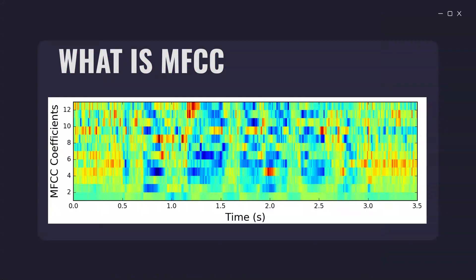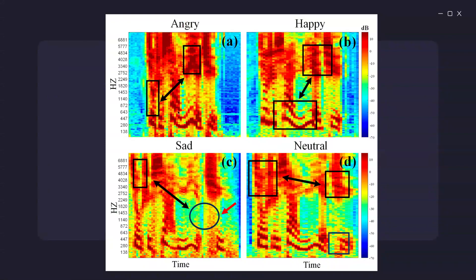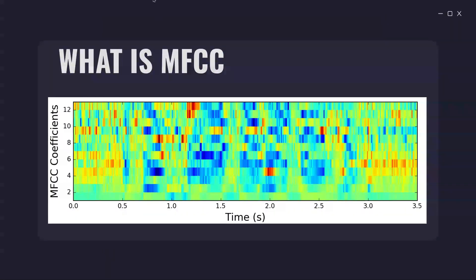Feature extraction is the process of transforming raw data into numerical features that can be processed while preserving the information in the dataset. The Mel spectrogram is an image containing very relevant data, but we need to convert it to a mathematical format while preserving the information so it can be used in machine learning modeling. That is done by MFCC. In this 2D vector, the numbers represent the features for each audio frame.